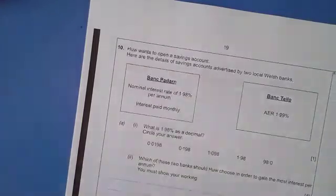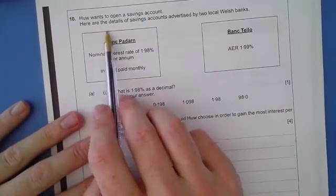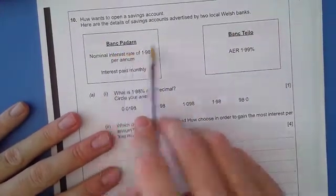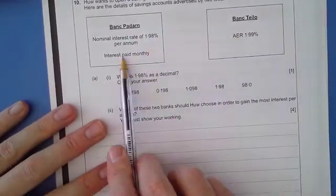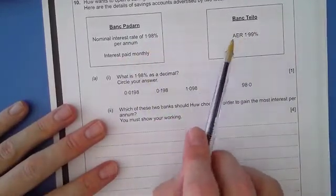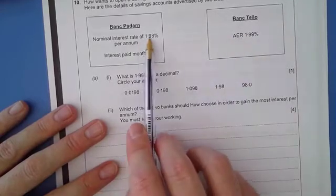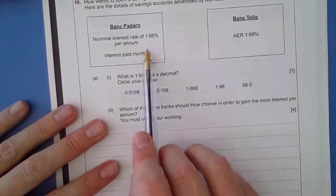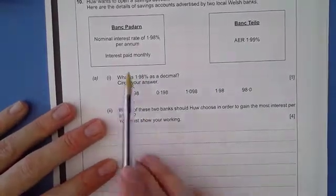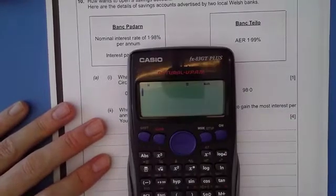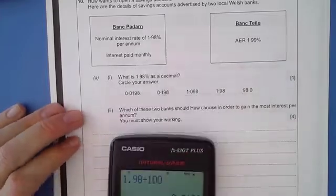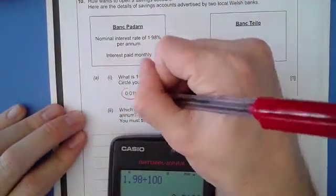The next question said, who wants to open a savings account? Here are the details of the savings accounts advertised by two local Welsh banks, Bank Pardan and Bank Tylon. On the face of it, this one is a better deal than this one because its interest is bigger. However, that's annual equivalent rate, so that's paid in a year. This is paid per annum, but you are paid every month, so you'll get interest on your interest. So it may turn out that this is a better deal. The first question says, what is 1.98% as a decimal? 1.98% means 1.98 divided by 100, and that comes to 0.0198, and hopefully that's an option. It is there.